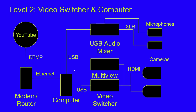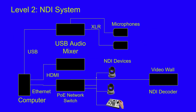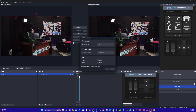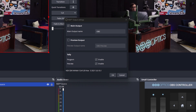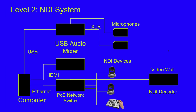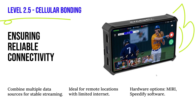When using NDI instead of video switchers, you've just got IP devices — two PTZ cameras and a joystick connected to the PoE network, and the computer just needs an ethernet connection. You can also power a video wall with a single NDI decoder box, which takes the NDI output from OBS, vMix, or Wirecast and sends it over the network to drive a display.